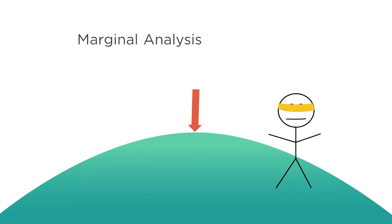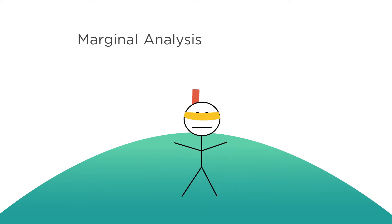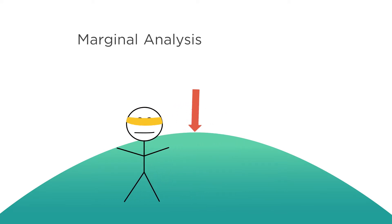Now one strategy you could use is to take your blindfold off each time you get placed at a random spot on the hill to see if you're at the top. If you aren't, you put the blindfold back on, get placed at another random spot, and then take the blindfold off to see if that spot is the top.